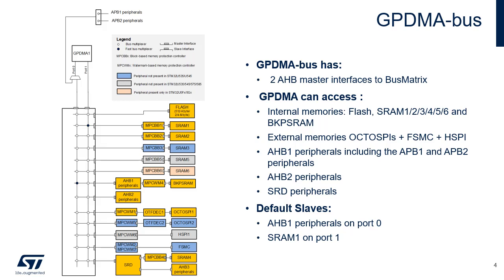These buses connect two AHB master interfaces of the GPDMA to the bus matrix and target the internal flash memory, the internal SRAMs (SRAM1, SRAM2, SRAM3, SRAM4, SRAM5, SRAM6 and BKPSRAM), the AHB1 peripherals including APB1 and APB2 peripherals, the AHB2 peripherals, the SRD peripherals and external memories through FSMC, HSPI1 or OctoSPIs. The default slaves are AHB1 peripherals for port 0 and SRAM1 for port 1. GPDMA port 0 also has direct access to APB1 and APB2 peripherals with reduced latency.